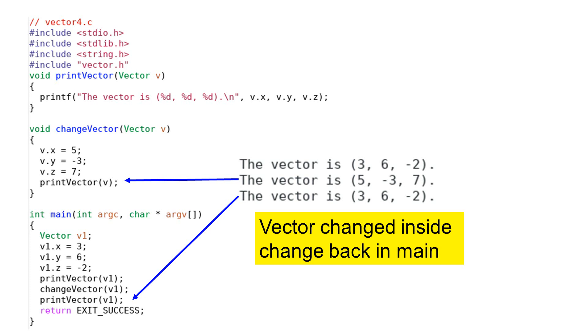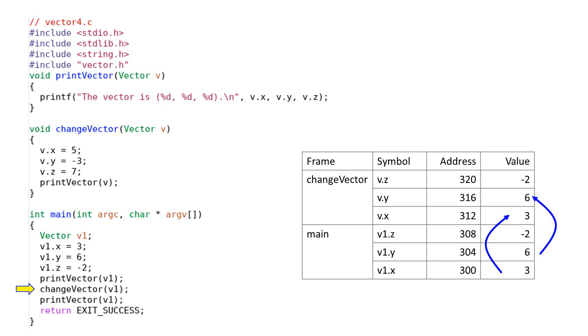When passing the vector object v1 from main to the change vector function, a new object is created for the argument. This object is called v and it is on the stack of the called function. The attributes are copied from the main function to the change vector attribute by attribute. Because the argument v occupies different memory space from the memory space for v1, changing v inside the function has no effect on the v1 object inside the main function. If you are familiar with Java, Python, or C++, this argument passing in C is different.